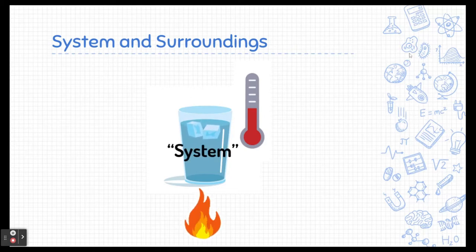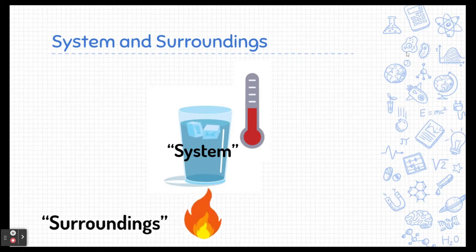System is the thing that we are focusing our thought process on. We're trying to understand what is happening to the system in terms of heat exchange. The surroundings is everything around the system typically interacting with the system in terms of heat exchange.